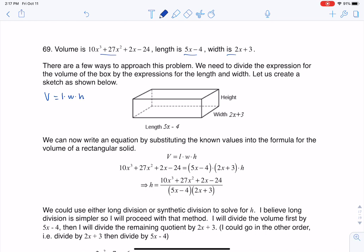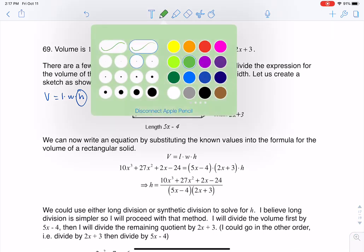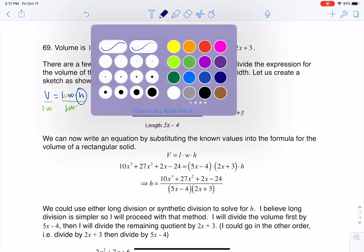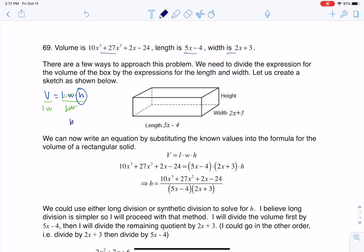If you wanted to, you could solve that equation for height by dividing both sides by length times width. It would cancel on this side, and if I solve that, I would ultimately get height on this side was equal to volume over length times width.